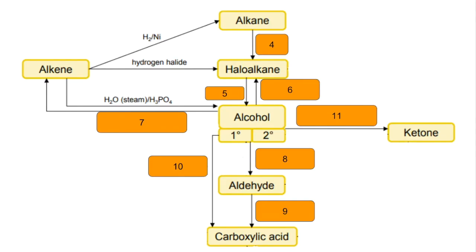Number 4: alkane to haloalkane. You react the alkane with a halogen in the presence of UV light.